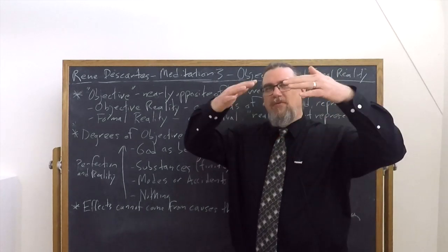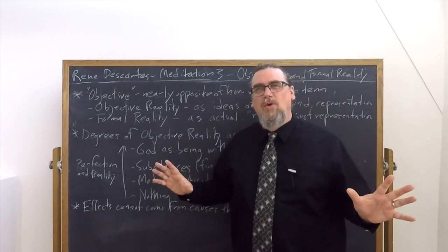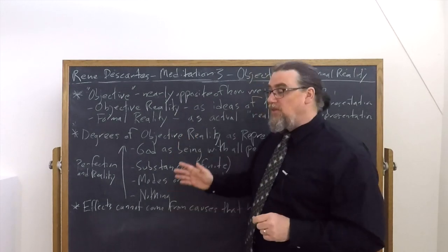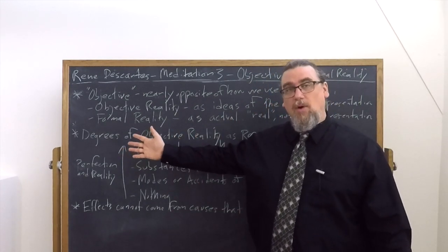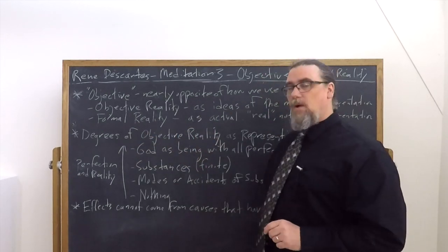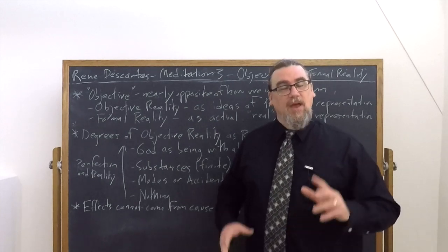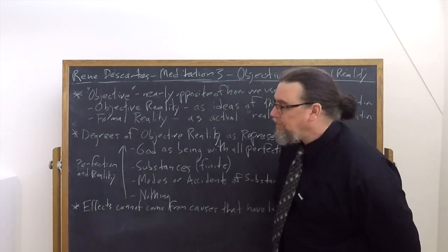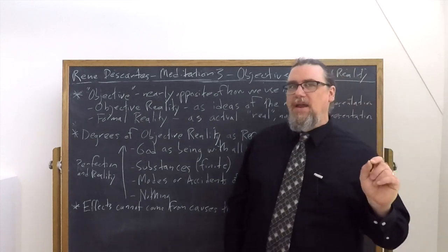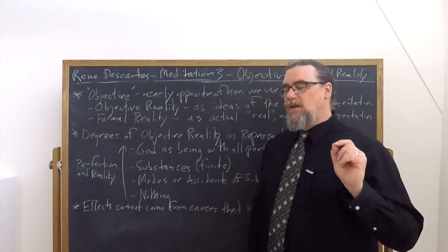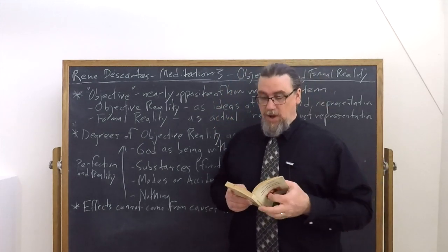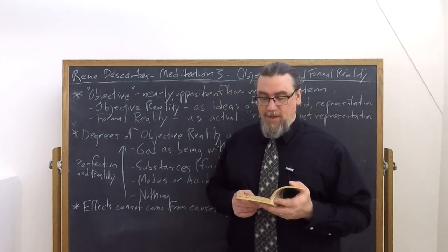And we could, we might go further and further down. Descartes doesn't worry about this. He's interested primarily in establishing the fact that there are degrees of being or perfection or objective reality for different sorts of things that we have as ideas. So already we've got substances and by this, he means finite substances primarily because he can compare it to another kind of substance, which he calls God.